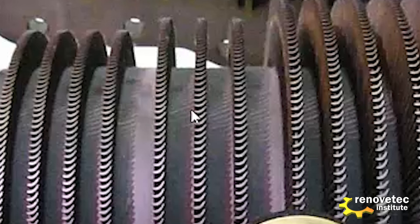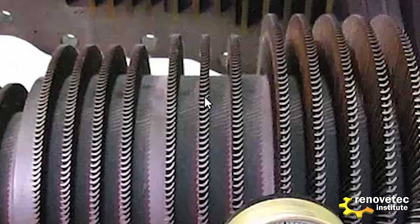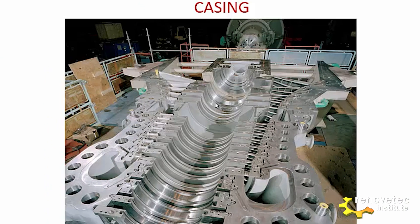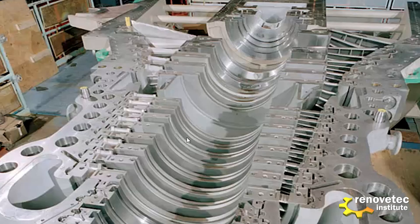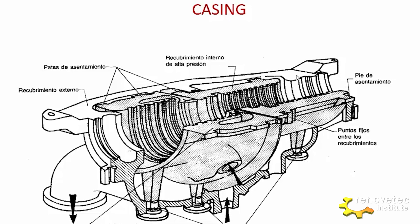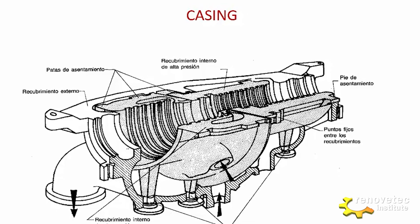What happens is that all the pressure is between two blades, and the outlet flow is what impulses the turbine. Here we have a casing for a high pressure turbine. Remember that in this case the casing is a double casing — this is the outer casing and this is the inner casing.